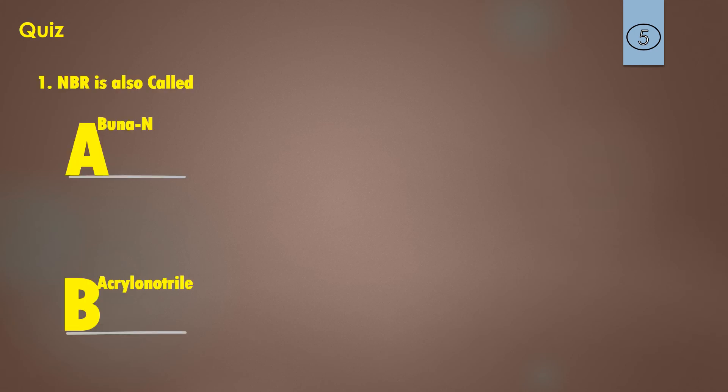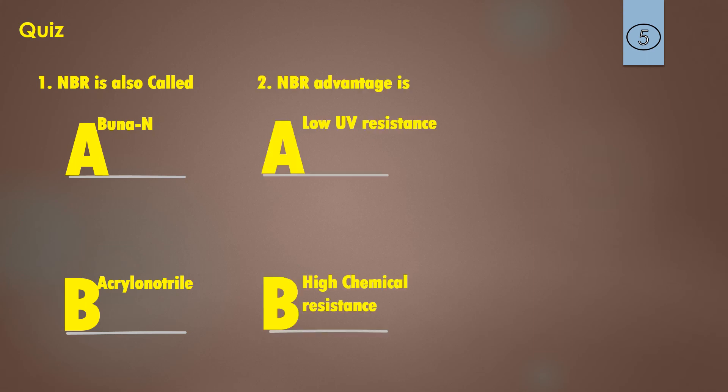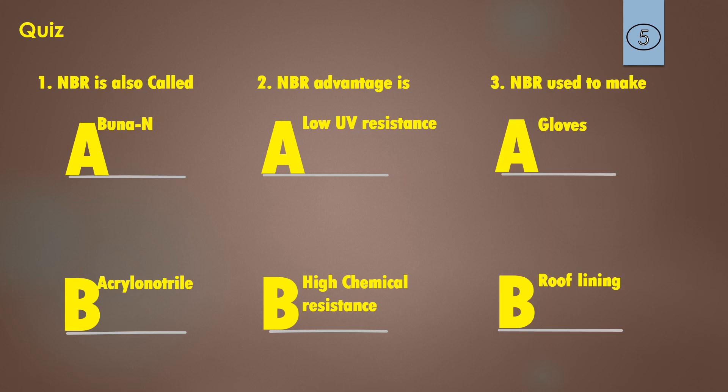Friends, let us have a small quiz to understand how much knowledge you gathered from this video. Question one: NBR is also called — is it Buna N or Acrylonitrile? Question two: NBR's advantage is — low UV resistance or high chemical resistance? Question three: NBR is used to make — glasses or roof lining? Please mention your answers in the comment section.